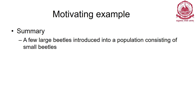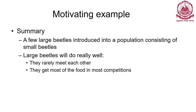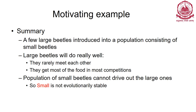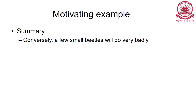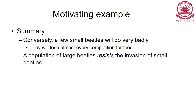Summary: A few large beetles introduced into a population of small beetles will do really well - they rarely meet each other and get most of the food in most competitions. A population of small beetles cannot drive out the large ones, so small is not evolutionary stable. Conversely, a few small beetles introduced into a large population will do very badly, losing almost every competition for food. A population of large beetles resists invasion by small beetles - large is evolutionary stable.